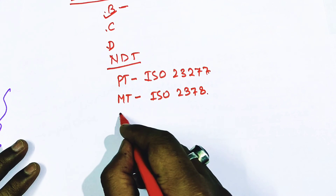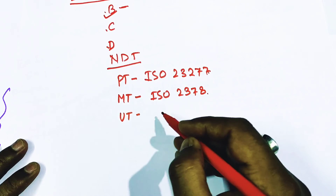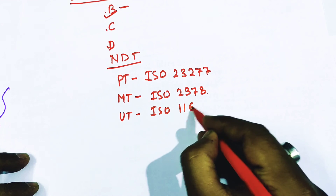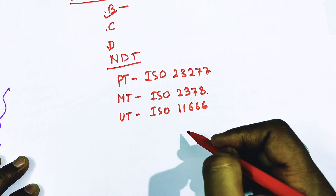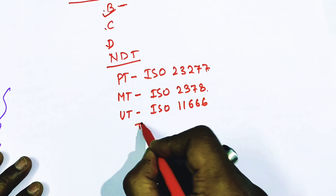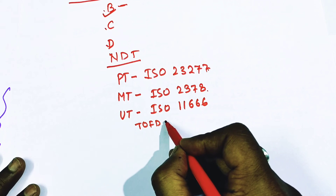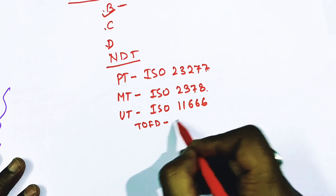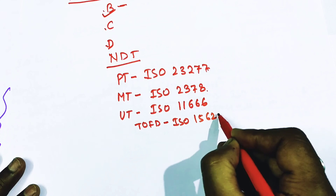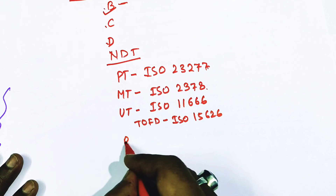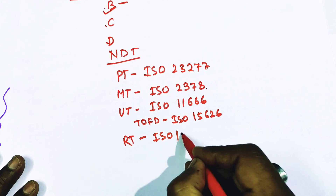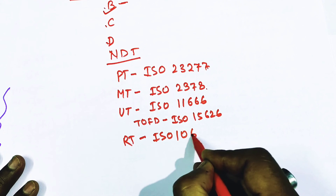For ultrasonic testing, the acceptance code is ISO 11666. For advanced UT — that is TOFD (time of flight diffraction) — the acceptance code is ISO 15626. And finally, for radiography test, the acceptance criteria code is ISO 10675.